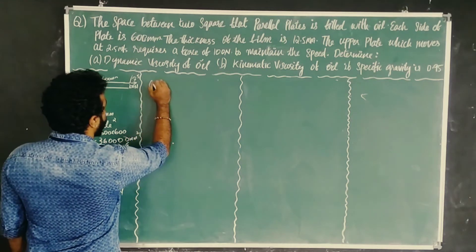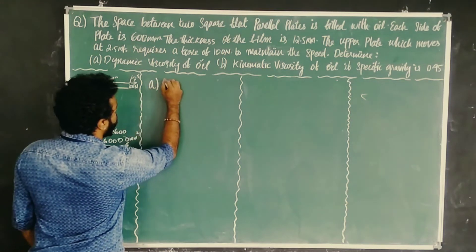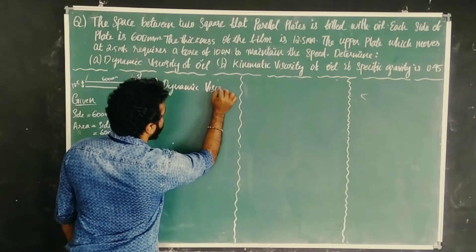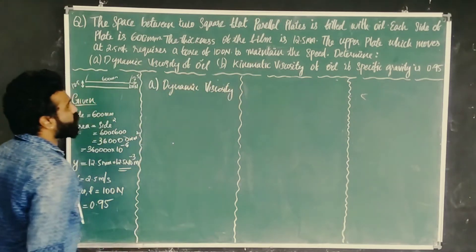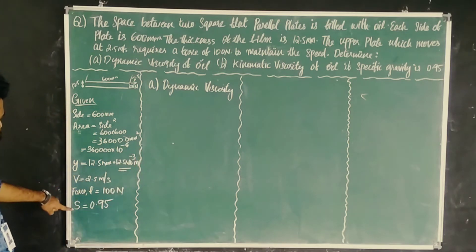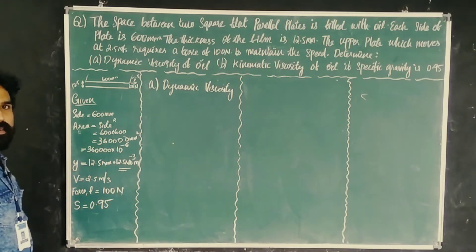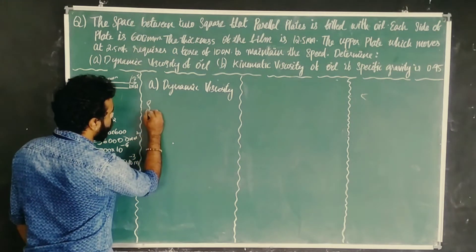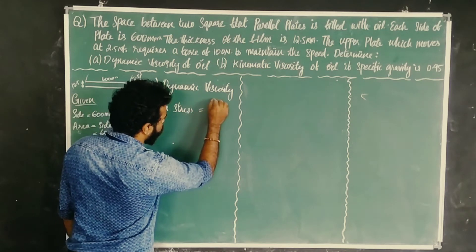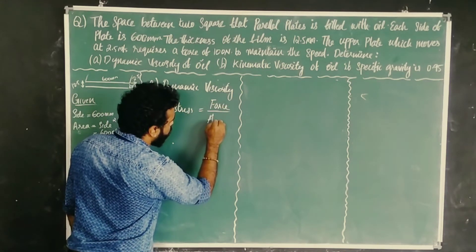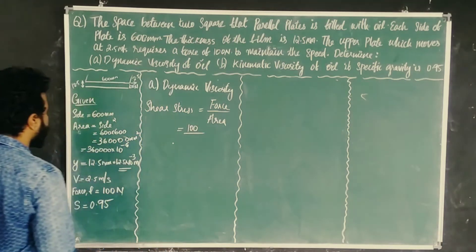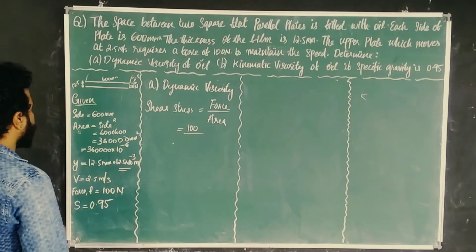Now we calculate dynamic viscosity. We calculate the shear stress using force divided by area. Shear force is 100 N, and the area we calculated is 0.36 m².